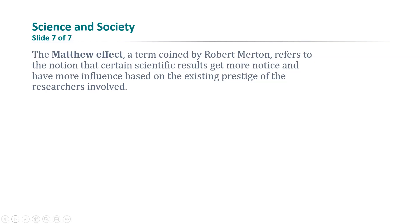The Matthew Effect, a term coined by Robert Merton, refers to the notion that certain scientific results get more noticed and have more influence based on the existing prestige of the researcher involved. This means that if Einstein were alive today and claimed he found something really important, the findings might be given more credence just because it was Einstein who made the discovery. On the other hand, if a student in one of my classes, like you, discovers something really incredible but hasn't established a reputation yet, people might not be inclined to believe you.